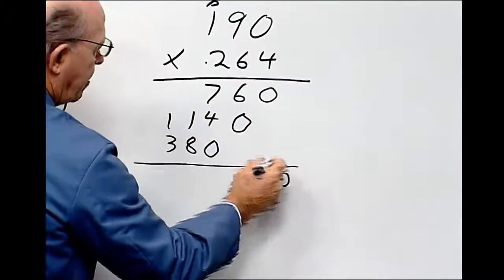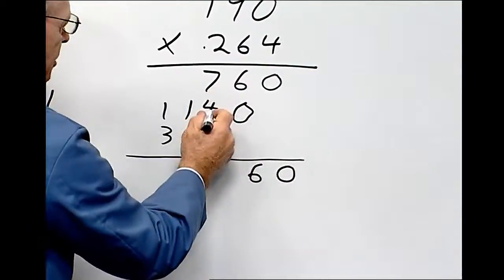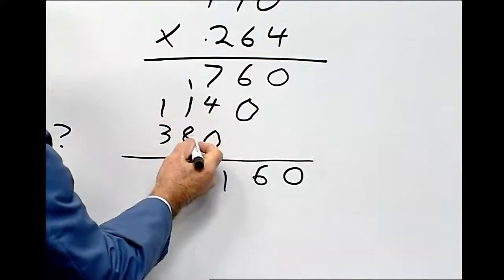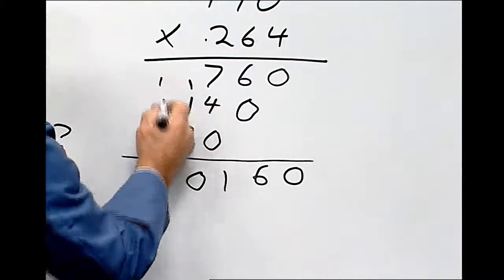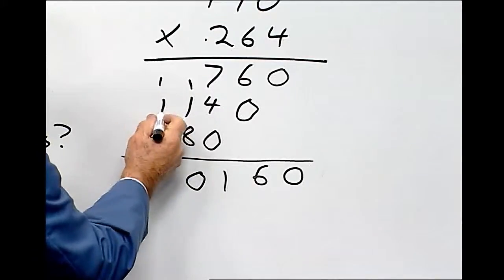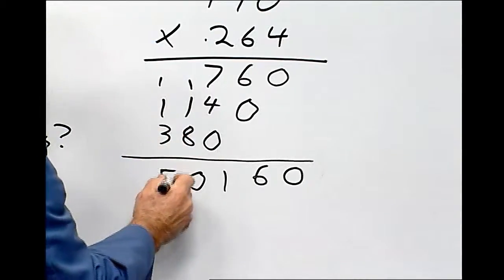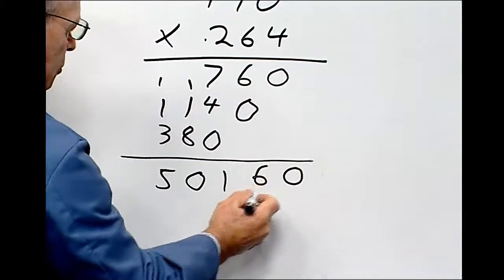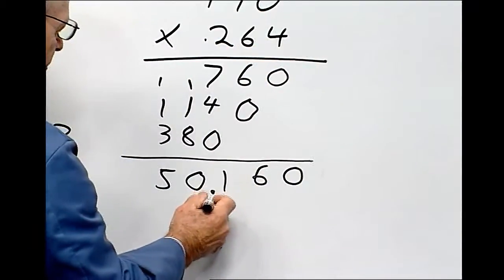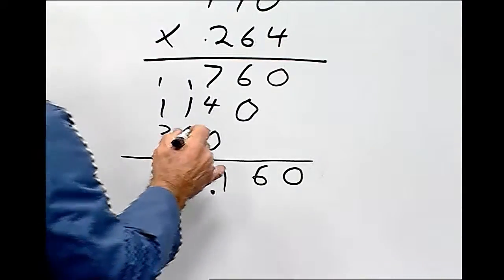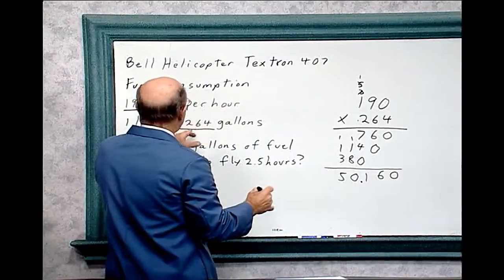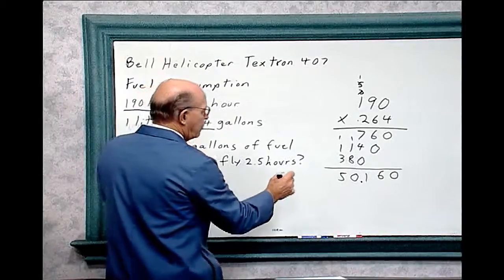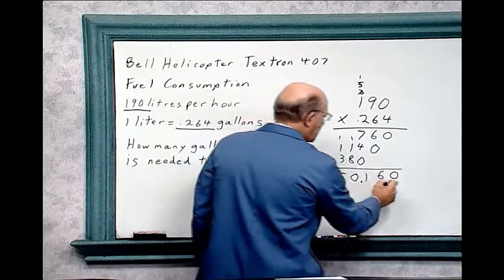Zero. Six. Seven plus four is 11. One plus one is two, plus eight is 10. And one plus one plus three is five. And we have one, two, three decimal places. So we've got to go one, two, three. So, 190 liters per hour in gallons will be 50.16 gallons.